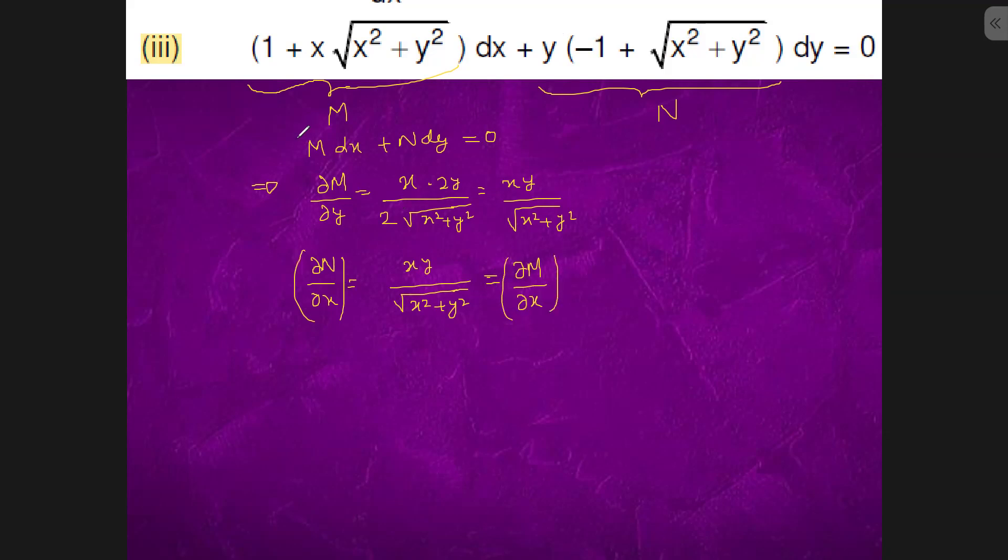Then we have integration of M dx plus integration of just the y part of this, that is minus y dy plus c equals to zero. So M dx is x plus x root under x square plus y square dx.